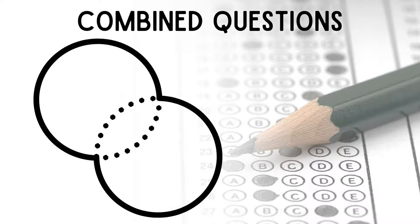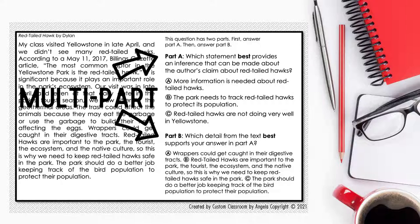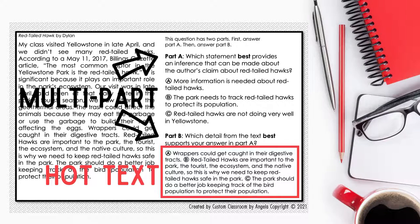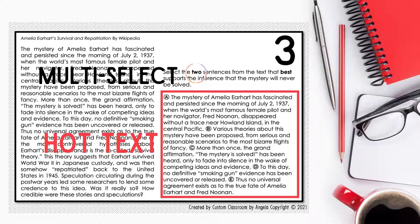You may also see combined questions that use more than one item type — for example, multi-part with hot text, or multi-select with hot text.